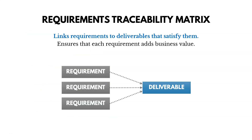Another output of the collect requirements process is the requirements traceability matrix. This links requirements to deliverables that satisfy them and ensures each requirement adds value by tracing it back to the business need. There must be a business reason for why we're doing these things, and we want to make sure the requirements actually trace back to that.